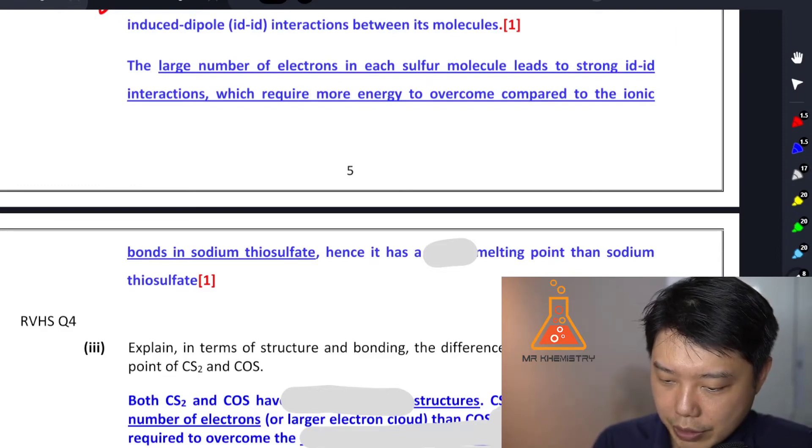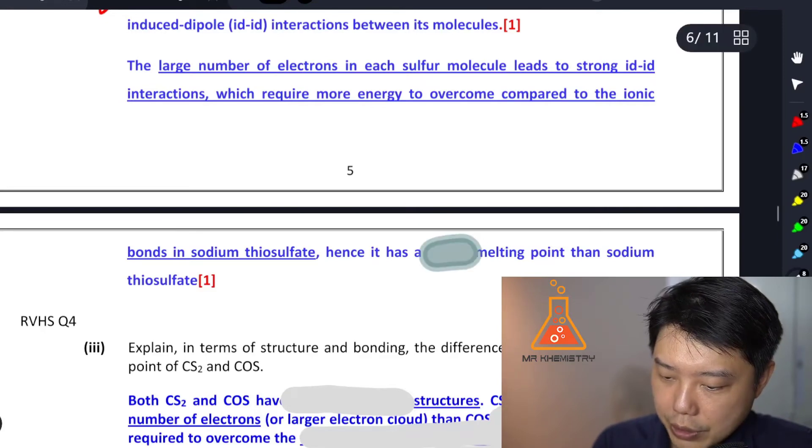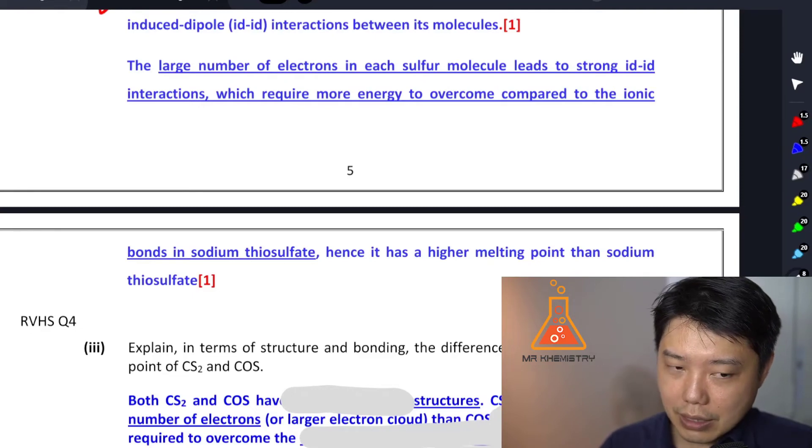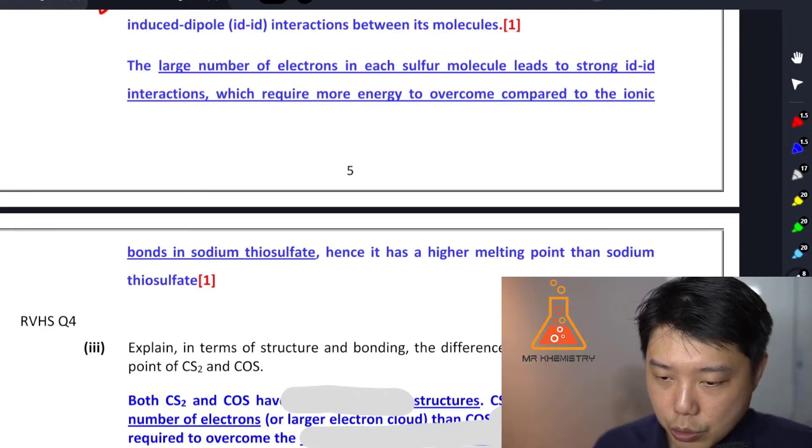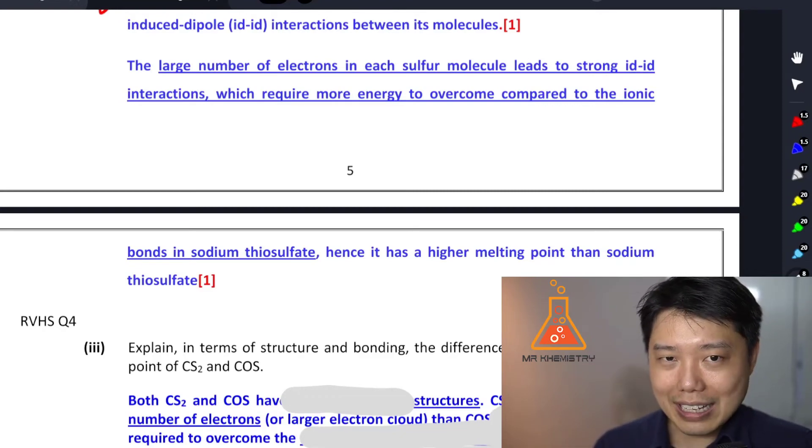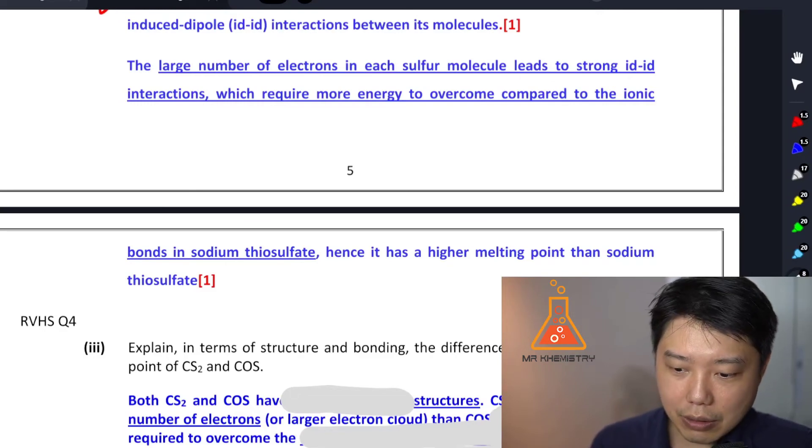Okay, so therefore it has a higher melting point. Notice this question actually goes against what we know to be generally true for ionic compound, but we're not going to argue against data. We're not going to argue against that. We're just going to take note of this data and just explain it as if it was a fact. Okay, generally we know that ionic bonds are stronger, but not in this case.